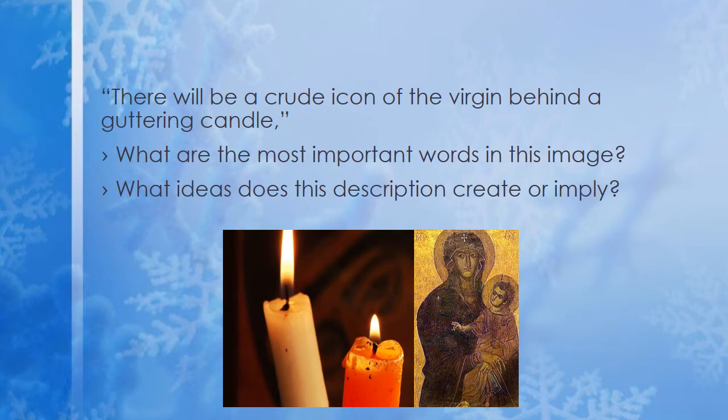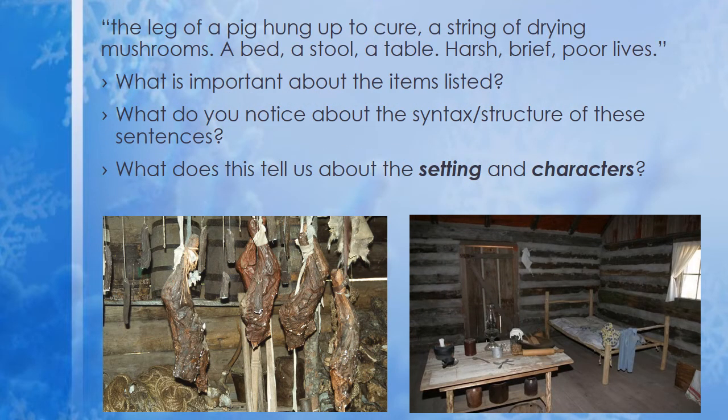'The leg of a pig hung up to cure, a string of drying mushrooms, a bed, a stool, a table. Harsh, brief, poor lives.' Again, just a list of things — not even really statements, just a list of items. What's important about the items? They're all pretty mundane, necessary for survival: food, someplace to sleep, someplace to rest. Nothing fancy, and no description of what the bed or stool or table looks like because they're probably not much to look at. The repetition of 'bed, stool, table, harsh, brief, poor' creates a kind of rhythm, setting us up to understand these characters as living simple, difficult, tough lives.